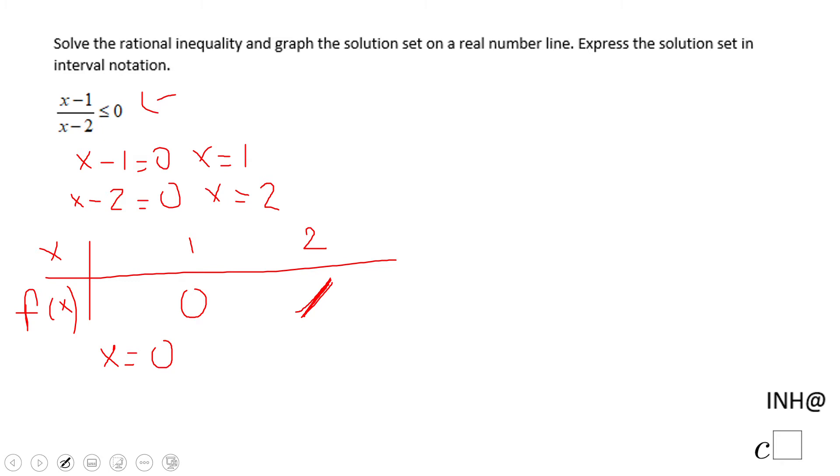When x is 0, x minus 1 becomes negative and x minus 2 becomes a negative number. So two negatives, if you divide, you get a positive. That's the reason I'm going to put plus here because 0 is at the left of 1.